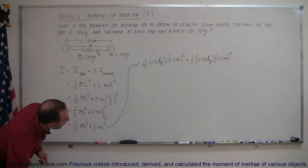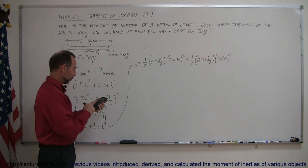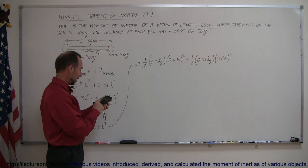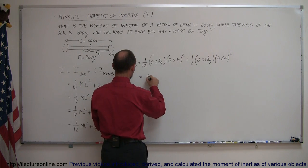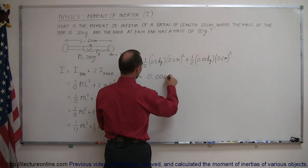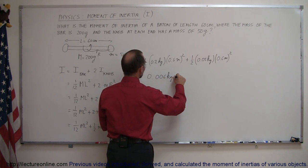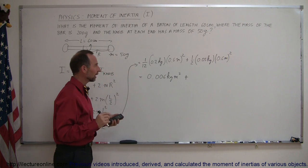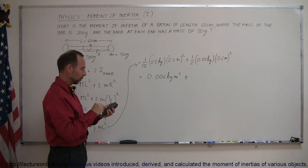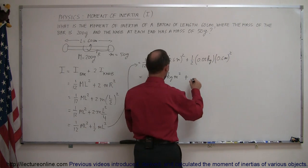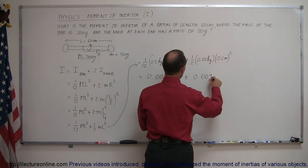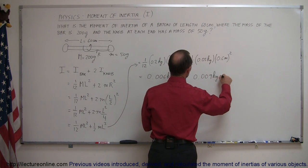Now we're ready to calculate what that is with our calculator. So we have 0.6 squared times 0.2 and we divide that by 12, and that would be equal to 0.006 kilogram meter squared. Doing the next one we get 0.6 squared times 0.05 and divide that by 2 and this is 0.009 kilogram meters squared.